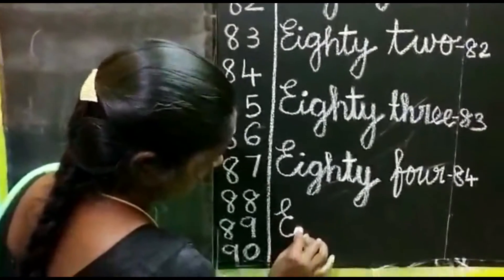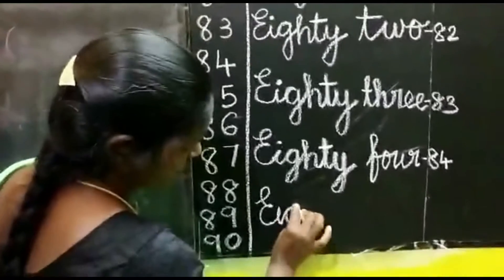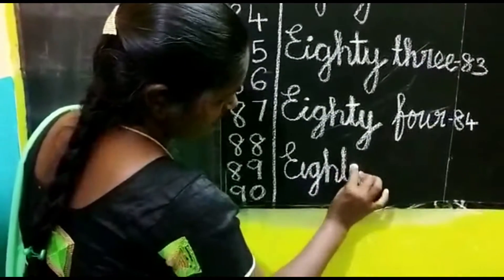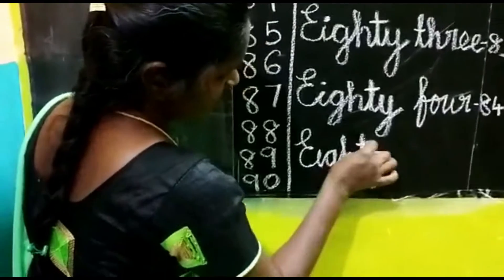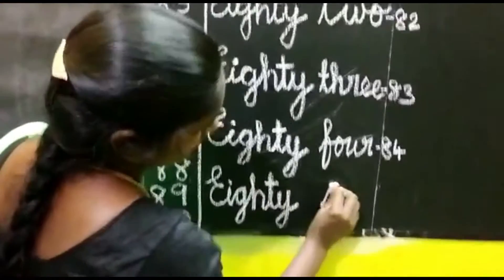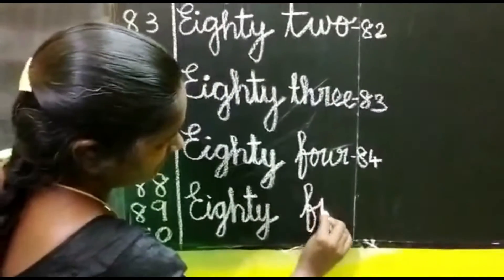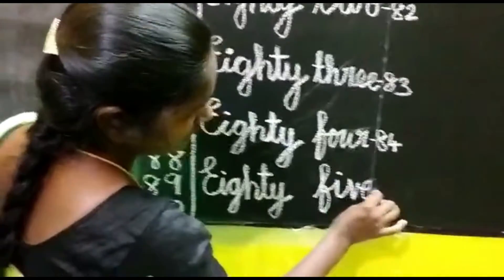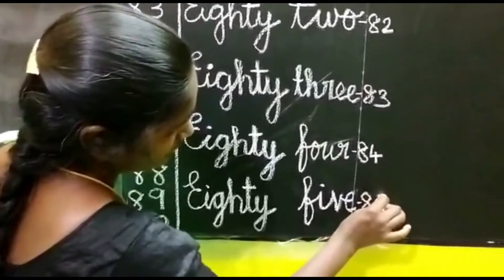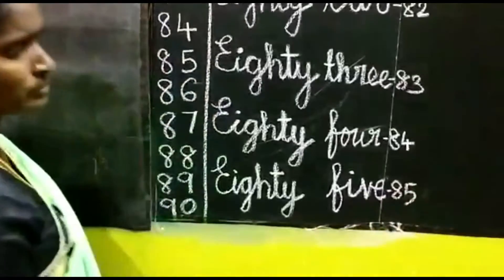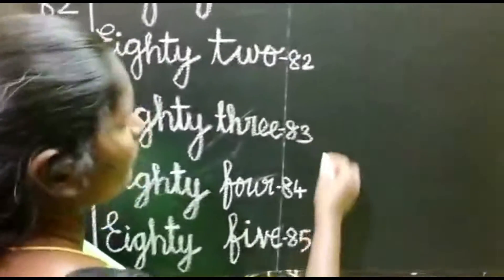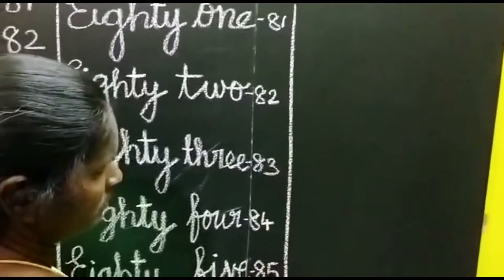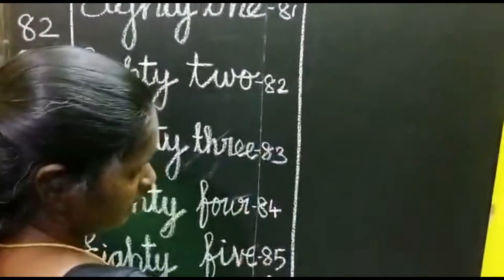85. E-I-G-H-T-Y. 85. F-I-V-E. 85 is EIGHTY FIVE. Okay, next. 85 finished. Next number.